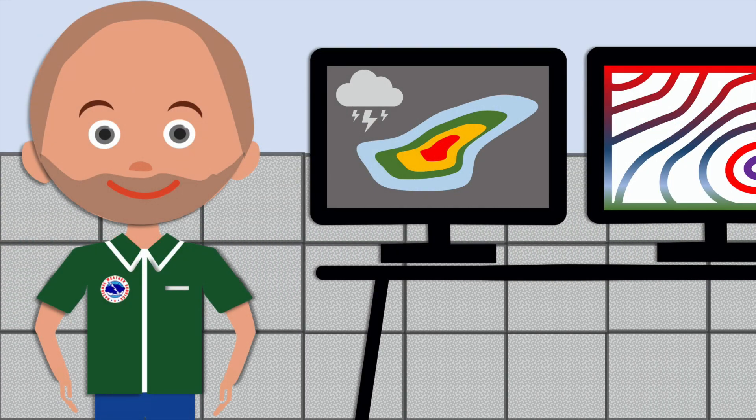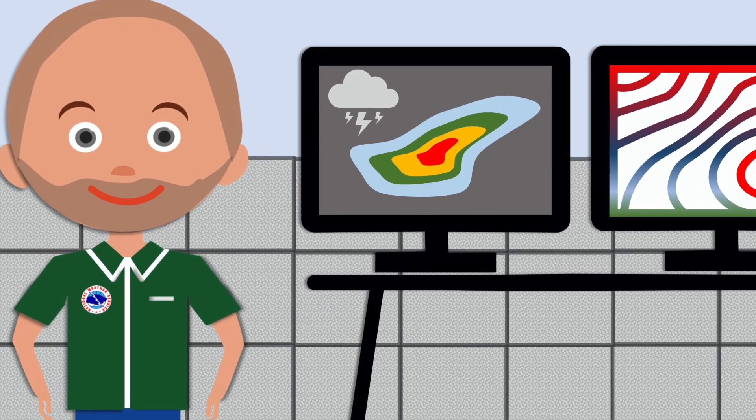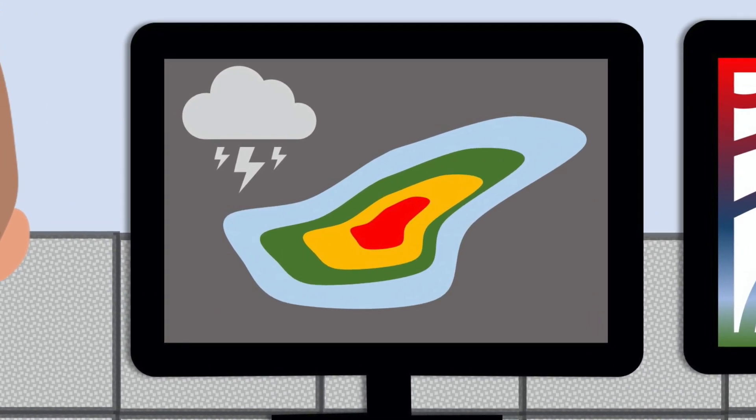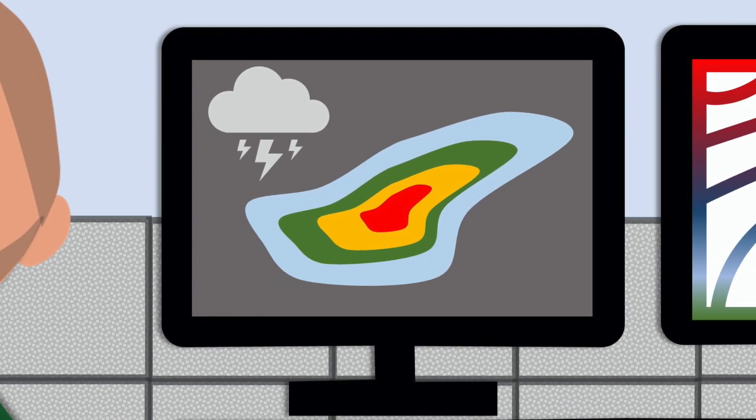Of course. Remember when you were up in the radar tower earlier? Well, the radar saw a storm developing in the distance. It sent that information to our computer so we can look at it here. See the storm on the screen? Today I am watching this storm to make sure that it doesn't get too big and become a severe thunderstorm. A severe thunderstorm can make big hail or strong winds or even a tornado.